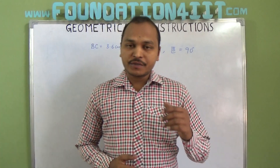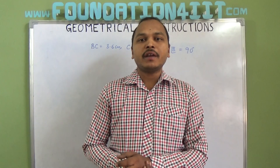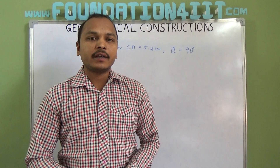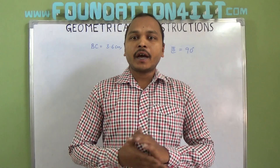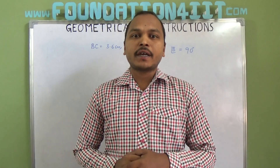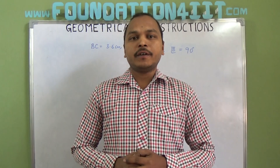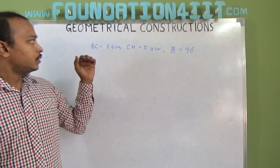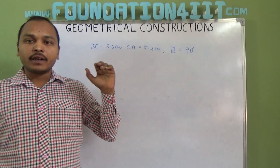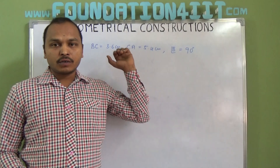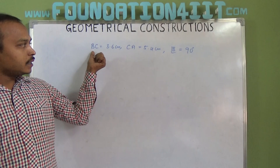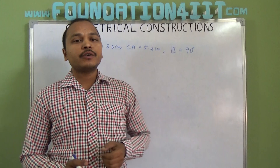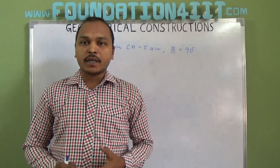Welcome to educational channel. In this video, I am going to explain how to construct a right angle triangle when the hypotenuse and one of its sides are given. The question is: construct triangle ABC where BC is 3.6, CA is 5.4, and angle B is 90 degrees.